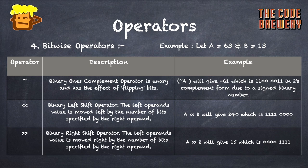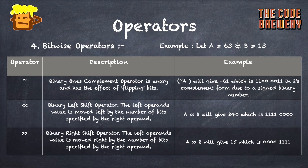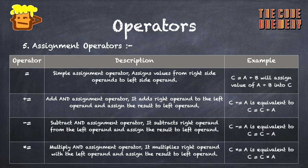The binary left shift operator (<<) moves the left operand's value left by the number of bits specified by the right operand — A << 2 gives 240 (11110000). The binary right shift operator (>>) moves the left operand's value right by the number of bits specified — A >> 2 gives 15 (00001111).